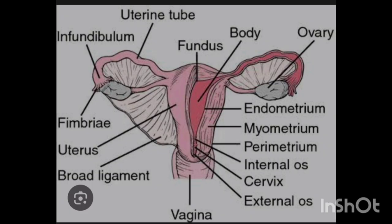After the uterus, we have the ovaries. The ovaries are two oval structures found on either side of the fallopian tubes — right and left ovaries. The ovary consists of a medulla (the internal part) and a cortex (the external part), just like a kidney. The ovaries contain follicles and are the organs that undergo oogenesis. Oogenesis means the production of eggs.